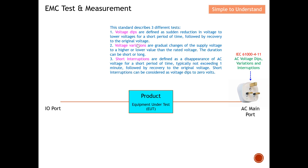Next is voltage variation. Under voltage variation, I will gradually change the supply voltage — not only on the low side but also on the high side — either higher or lower than the rated voltage. The duration can be either short or long. Again, this test checks whether the DUT can continue to function.